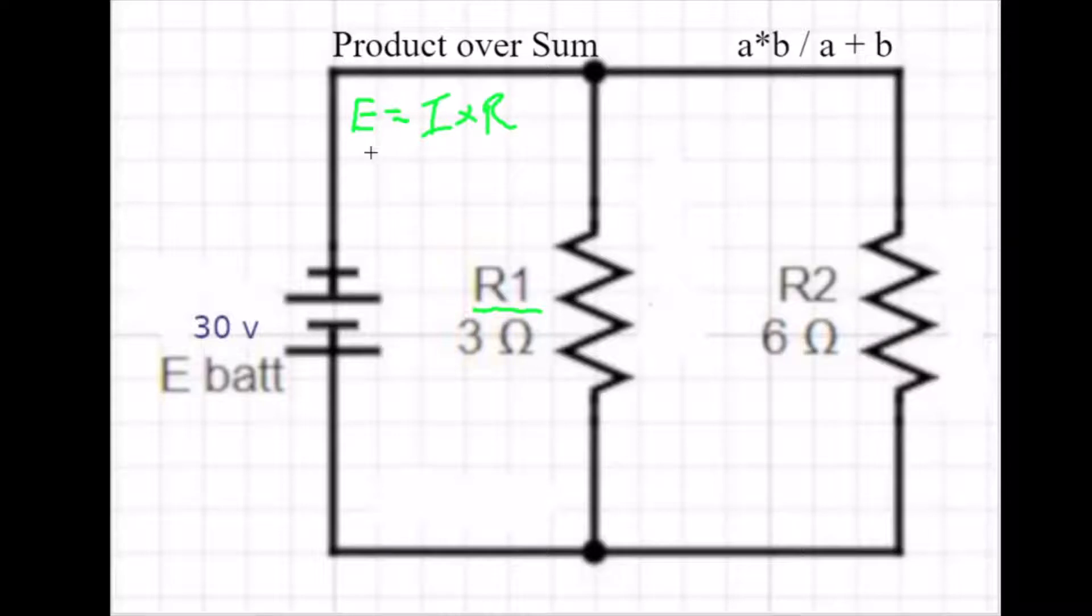And if we're going to solve for current, so we know that the voltage is 30, if we're doing R1, and the resistance is 3. So the amperage there would be 10 amps. And I'm going to write that down right here.